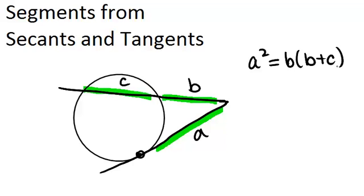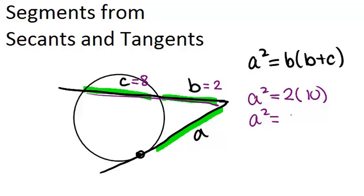So that means if A was unknown, but we knew that B was 2 and C was 8, we could use this equation to solve for A. We would know that A squared equals 2 times this full segment B plus C, which would be 10. So A squared would equal 20, which means A would equal the square root of 20, or 2 root 5.